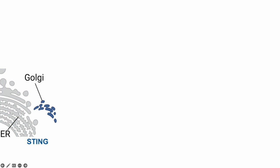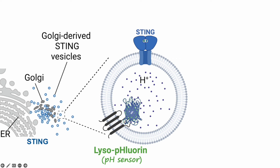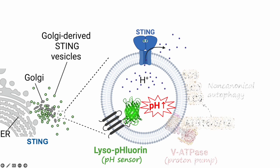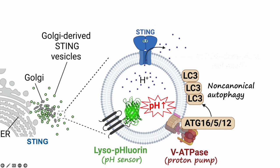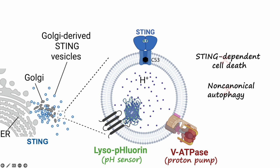In summary, ligand-binding activates STING trafficking from the ER through the Golgi to endosome-like acidic vesicles, where the channel of STING mediates proton efflux leading to vesicle deacidification. That is sensed by the proton pump VATPase to trigger LC3 lipidation, or non-canonical autophagy. Prolonged activation of the STING channel also triggers cell death. Whereas blocking the channel of STING by compound C53 fully abolishes STING-dependent vesicle deacidification, LC3 lipidation, and cell death, leaving the canonical TBK1 signaling unaffected.